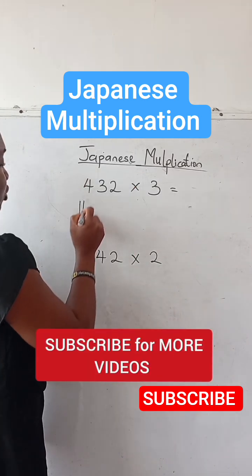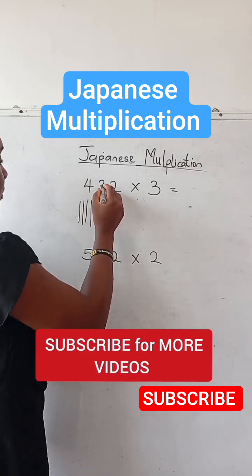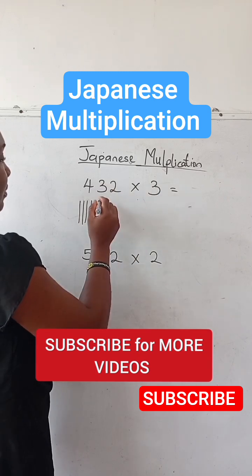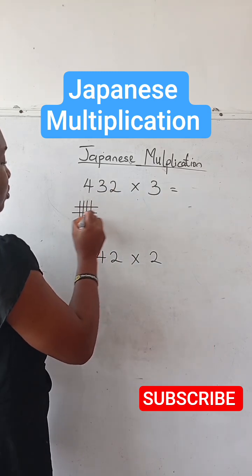You're going to have your 4 strokes. Let's count 4 times 3. 1, 2, 3.